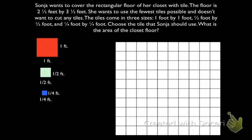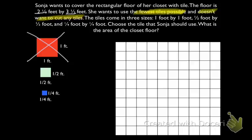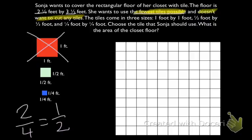I know that I can measure the rectangular floor in feet, half feet, and quarter feet. But it tells us that Sonia wants to use the fewest tiles possible and she doesn't want to cut any tiles, which means the tiles have to be perfect because you can't overlap them. The floor is two and a half feet by three and a half feet, so I can't use one-foot tiles because the fractional part left would have to be cut. Quarter-foot tiles can work since there are two quarters in one half, but I want to use the fewest tiles possible, so we'll use half-foot tiles.